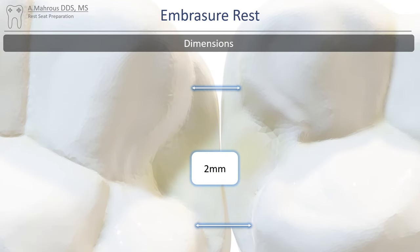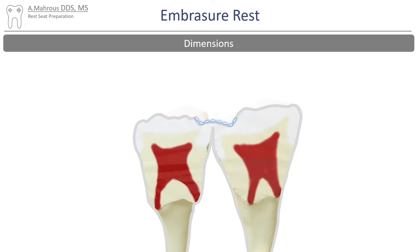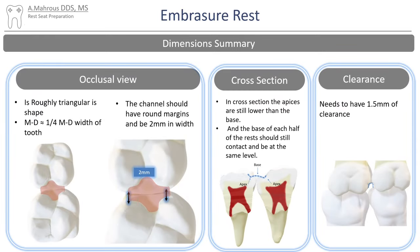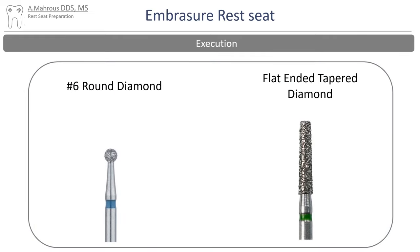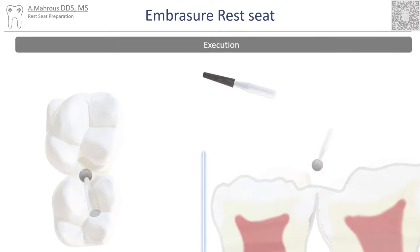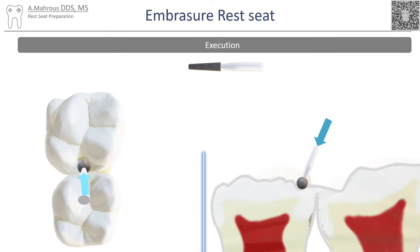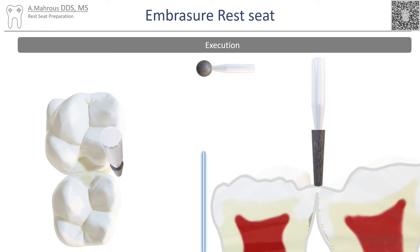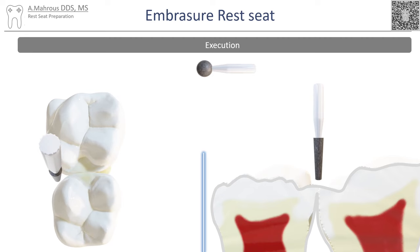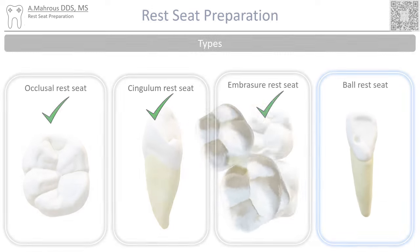The channel space should be about 2 millimeters in width. In cross-section, the apices of the rest seats should be more apical than the base. Preparation of the embrasure rest seat requires both a number six round diamond and a flat-ended tapered diamond. The number six round diamond is used first; preparation of one side is identical to that of an occlusal rest, then the angle is reversed and the same is repeated on the other side. After both sides are prepared, the channel is prepared using the flat-ended tapered diamond, moving from one side of the embrasure to the other while maintaining free-flowing rounded angles.